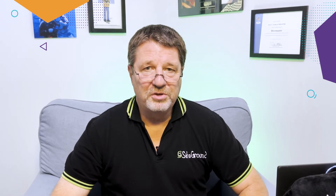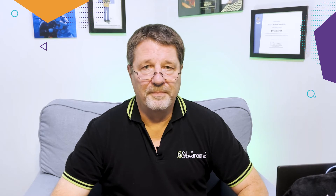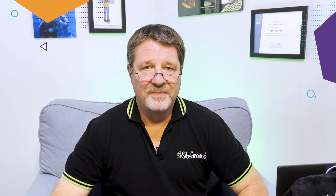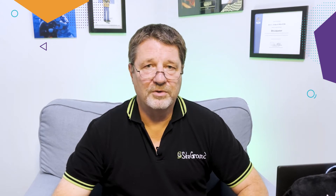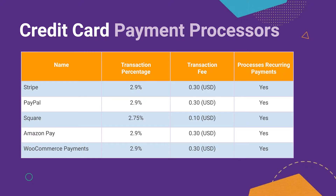There are two newer payment processors that you can choose from: Amazon Pay and WooCommerce Payments. Let's do a quick comparison of them based on three crucial metrics for most online store operators: percentage of transaction fees, and whether they offer recurring payments, which are commonly used for subscriptions. All three process recurring payments, but there are differences between them in the fees they charge and in the per-transaction fee percentage that they take.